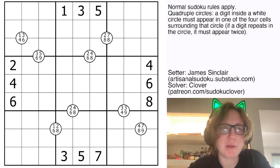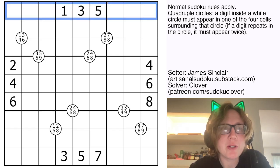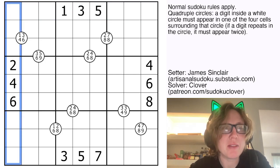So what's going on here? We place the digits one through nine once each in each row, each column, and each outlined three by three region.